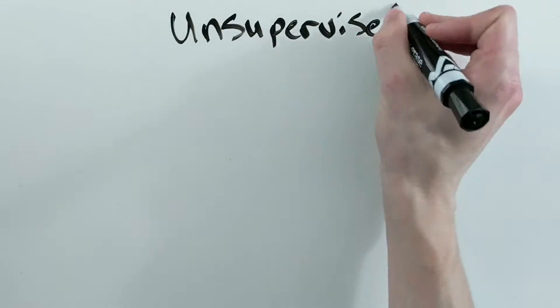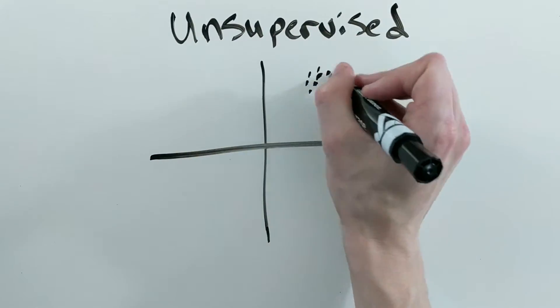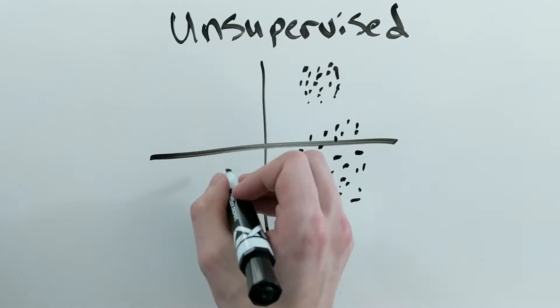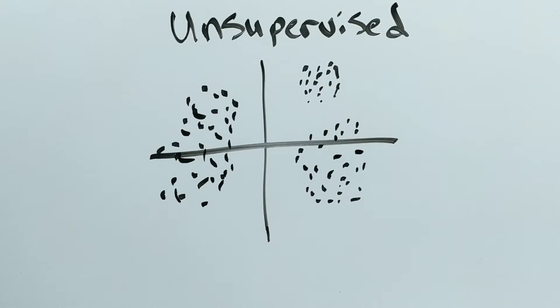Unsupervised learning is when you're trying to learn without labels. The canonical example is clustering, where given a bunch of data, you're trying to group together the data based on position.